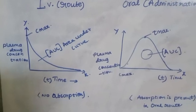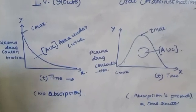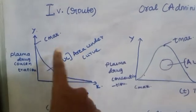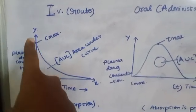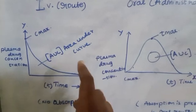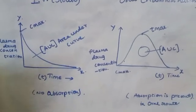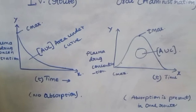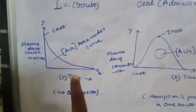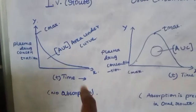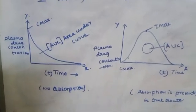With IV administration, the drug enters direct circulation, giving 100% bioavailability. Looking at the curve, concentration in the body increases initially, then decreases because of metabolism and elimination. The area under this curve from the graph is called AUC — the area under curve — which is what we measure in experimentation.